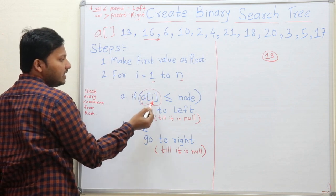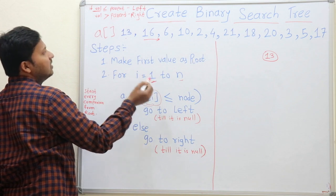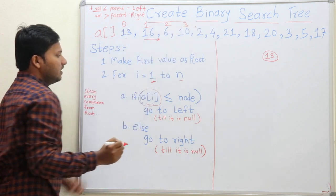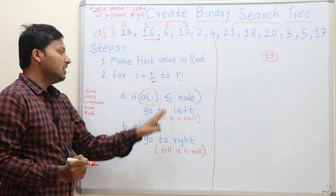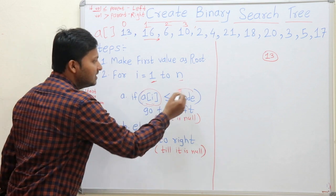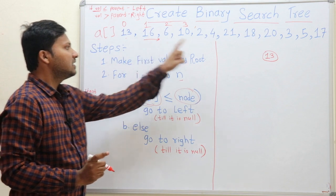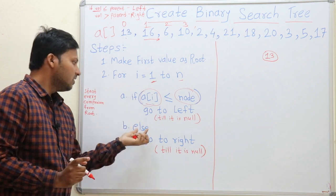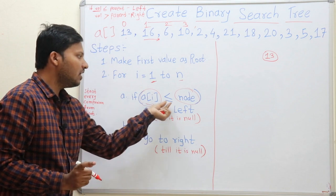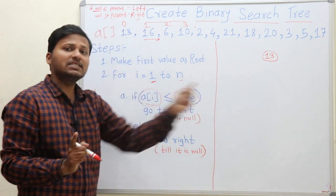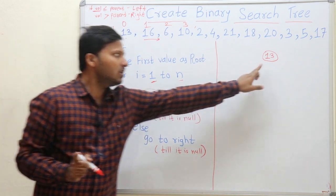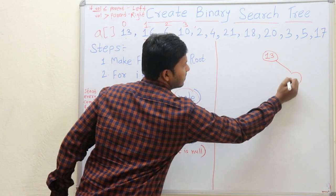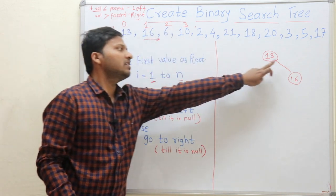The index goes 0, 1, 2, 3, and so on. Now if a[1], that is 16, is less than or equal to the node — node means its parent — check whether 16 is less than 13: no, it is not. So we go to the second condition: else go to right. Since 16 is greater than 13, it goes to the right.